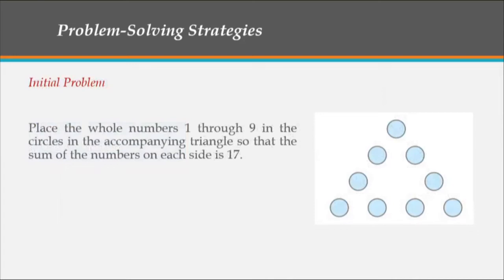Let's see this initial problem. Instruction: place the whole numbers 1 through 9 in the circles in the accompanying triangle so that the sum of the numbers on each side is 17. This means we need to complete 1 to 9, and when we compute each side of the triangle, the answer should be 17. Since this is in triangular form, we have three sides. The answer should be 1 to 17. If we fill out the numbers 1 to 9, there cannot be any repetition of numbers.